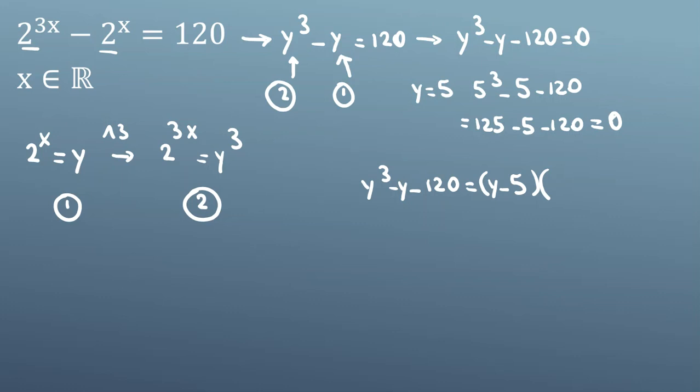Now to create y^3, I place y^2, which gives y^3. For -5y^2, since the left side doesn't have a y^2 term, I place +5y^2 to cancel. This gives 5y^2 - 25y, and we have the -y term.